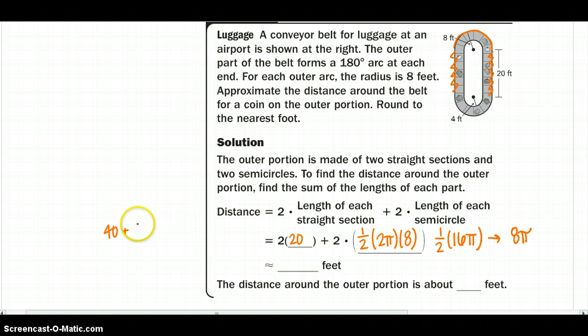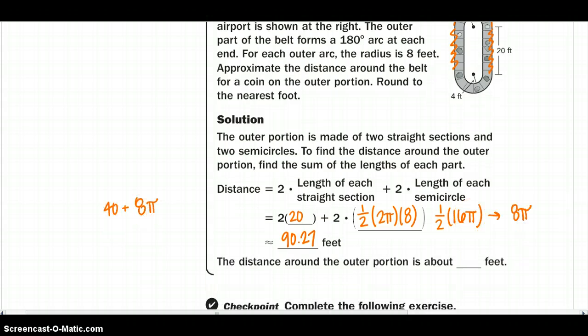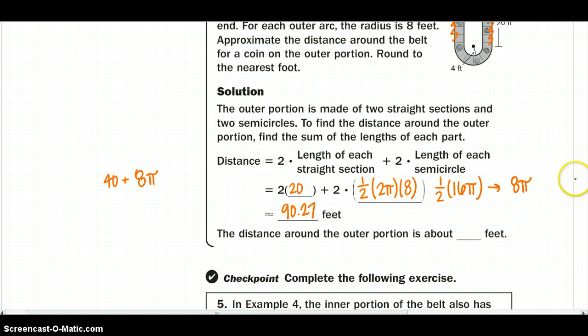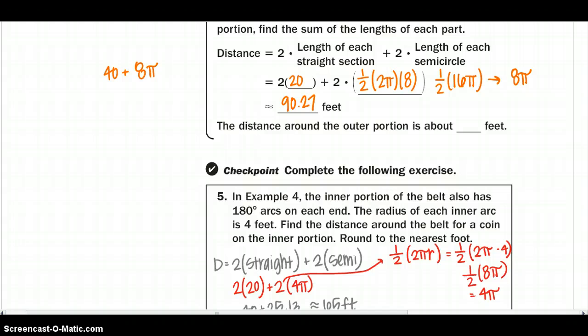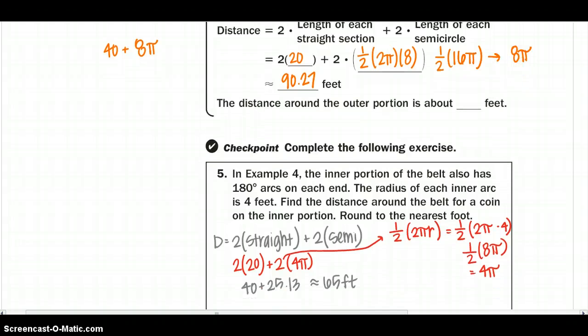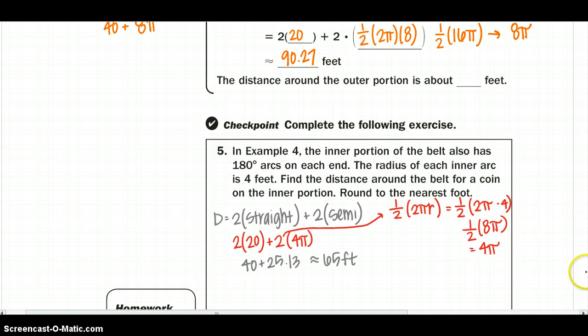So we're going to put 40 plus 8 pi to give us approximately 90.27 feet. You can go ahead and do number 5 to check out that same equation, and I think we are done here. So if you have any questions, please feel free to ask, but I hope you enjoyed it, and I hope that you got something out of it. Have a good night.